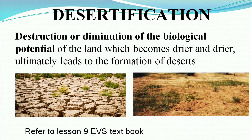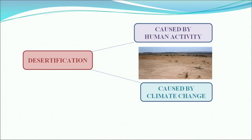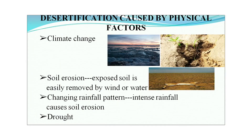Desertification is our next topic — destruction or diminution of the biological potential of the land, which becomes drier and drier, ultimately leading to the formation of desert. The pictures show an area on the way to desertification and the situation arising from lack of water in the soil. More details are discussed in lesson number 9. The table shows the effects of desertification caused either by human activities or due to climatic change.